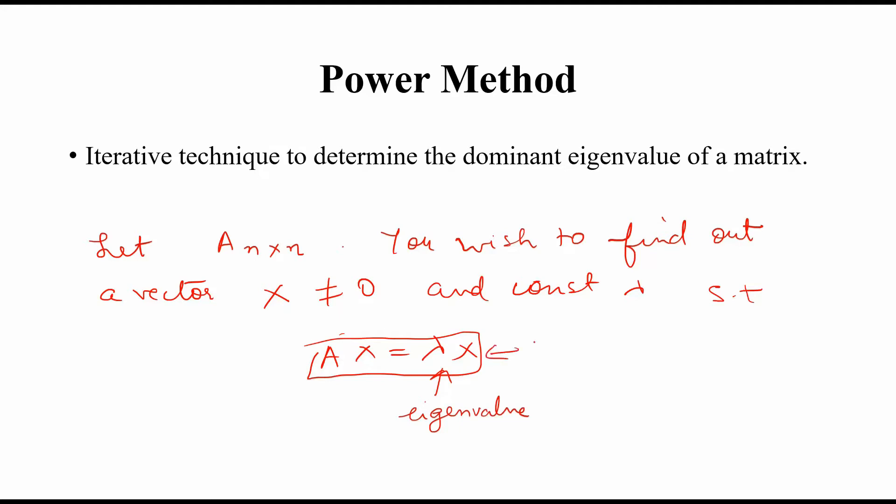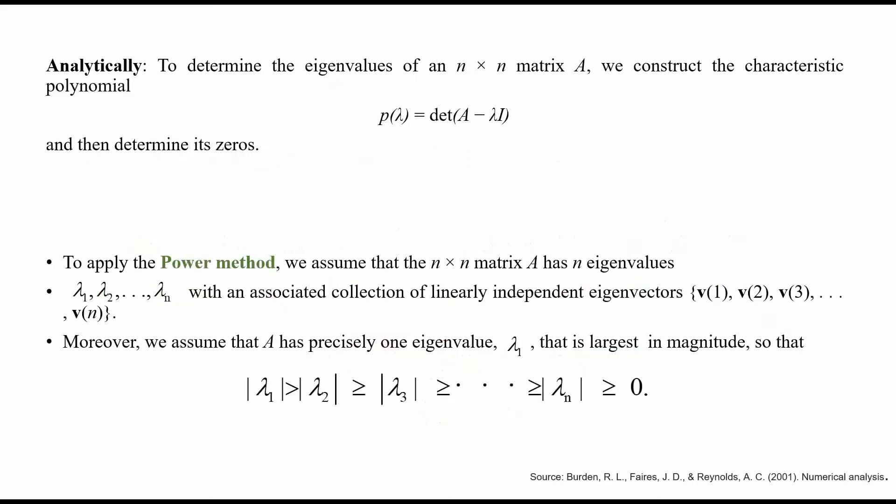With the help of the power method, basically it is an iterative technique which takes you to the largest eigenvalue for this matrix A. Analytically, if you want to find the eigenvalues of an n cross n matrix, you construct a characteristic polynomial p(λ) = det(A - λI) and then determine its zeros. The power method is an iterative technique to find the largest eigenvalue.